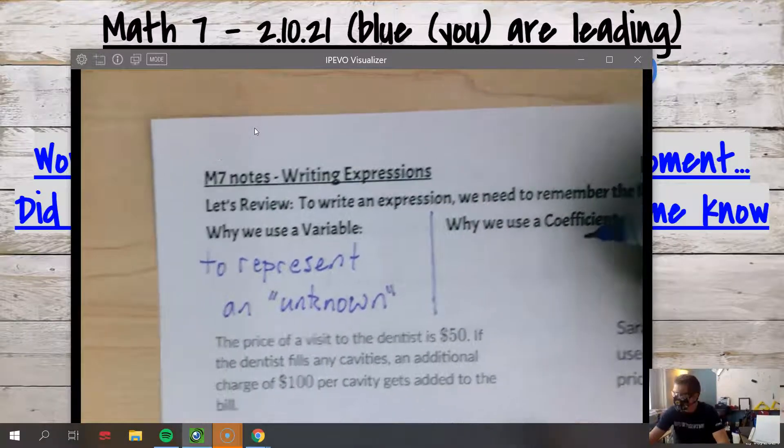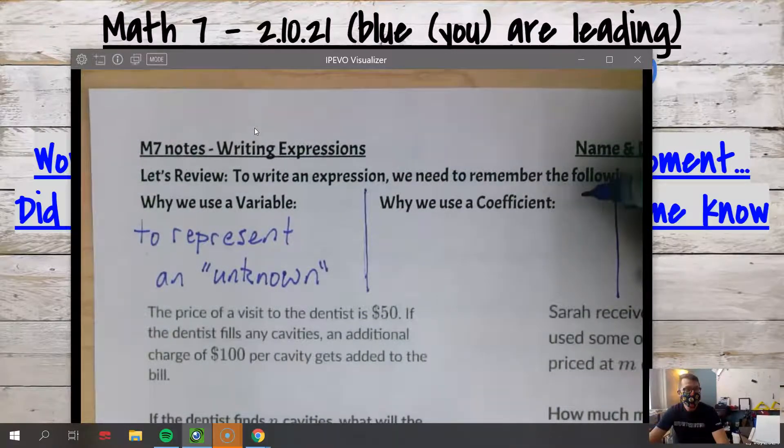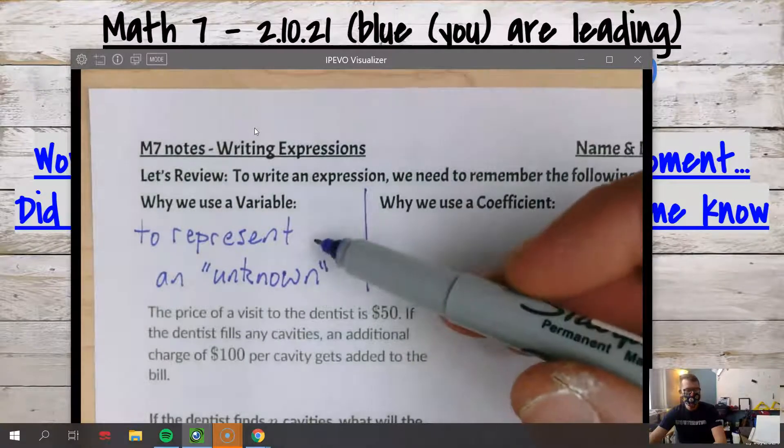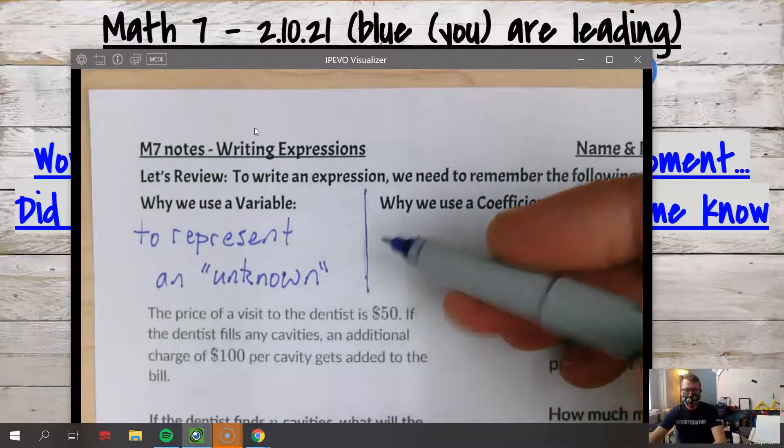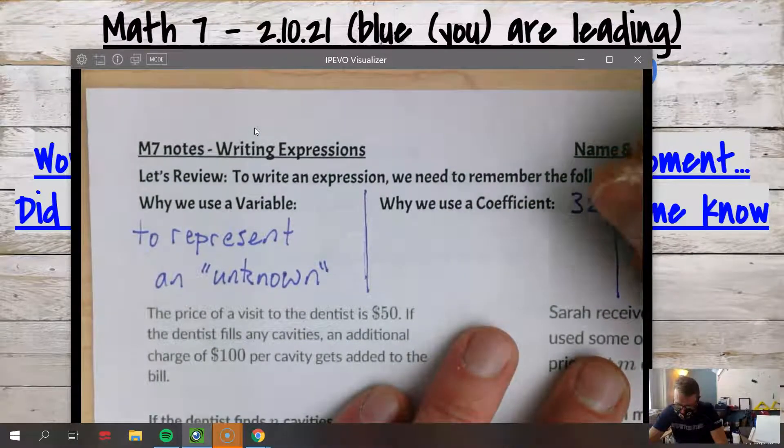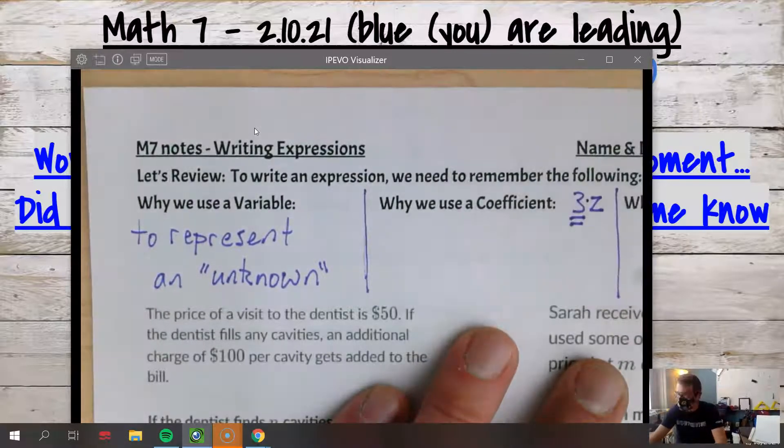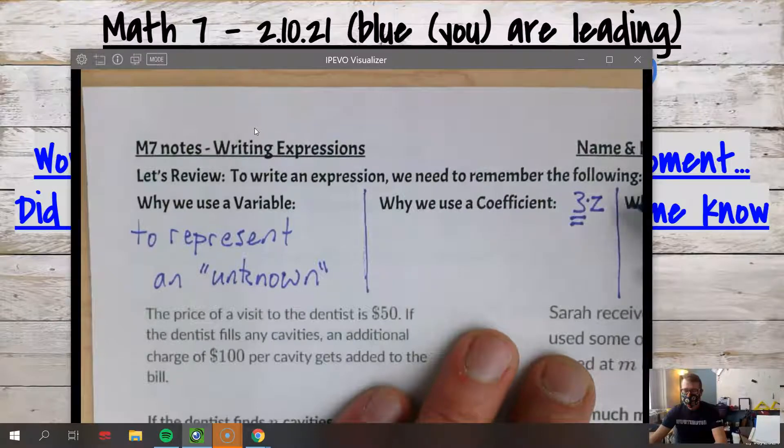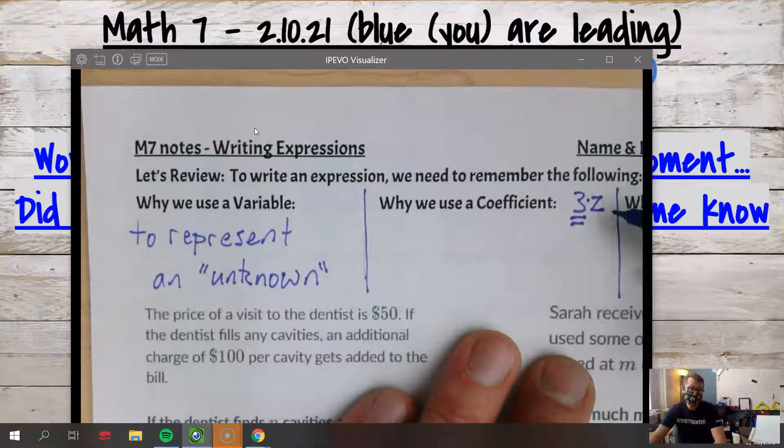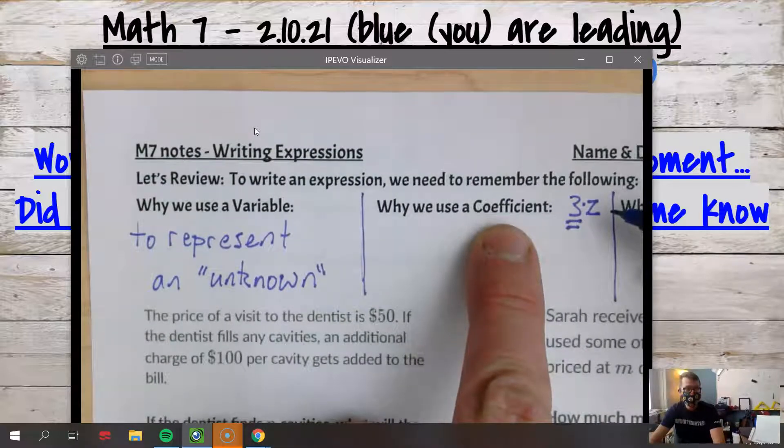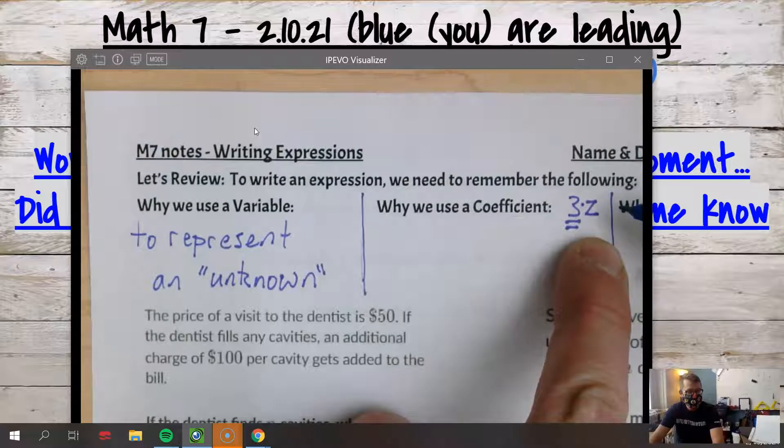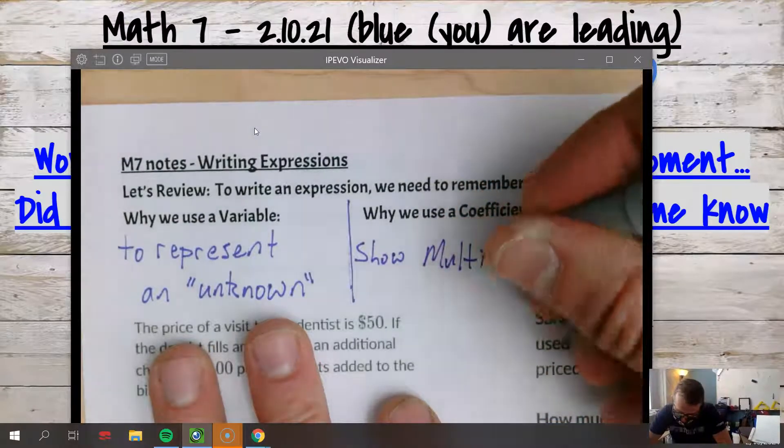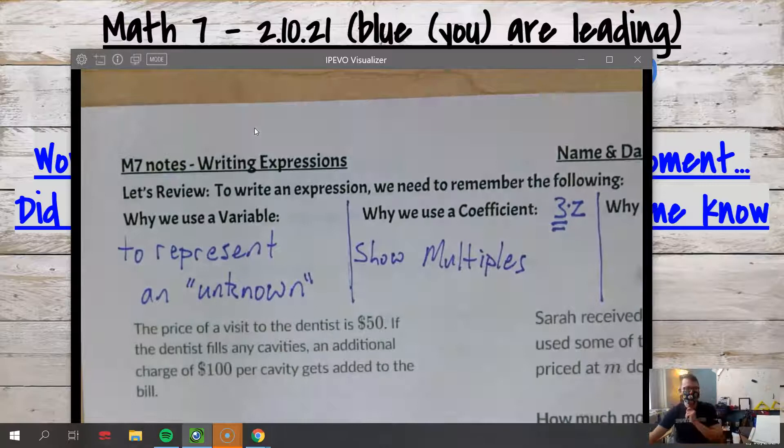Coefficient - we should remember what that means, but if we don't, you could make a note on your paper that that's the number or fraction that multiplies by the variable. So like 3z has the coefficient of 3. Why do we use a coefficient? Well, how do I only have 1z here? No, I have 3z's. So we use a coefficient to show multiples of the variable.